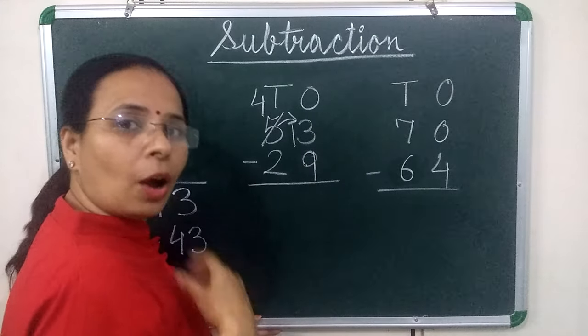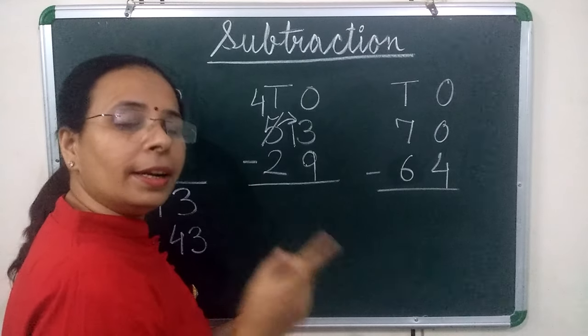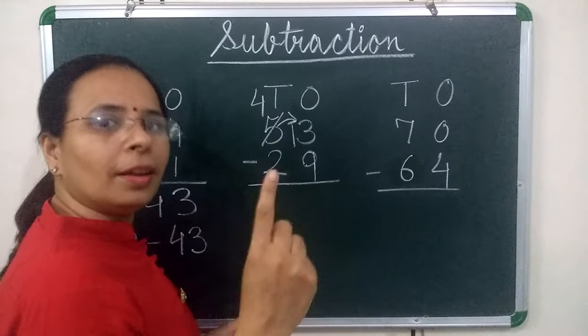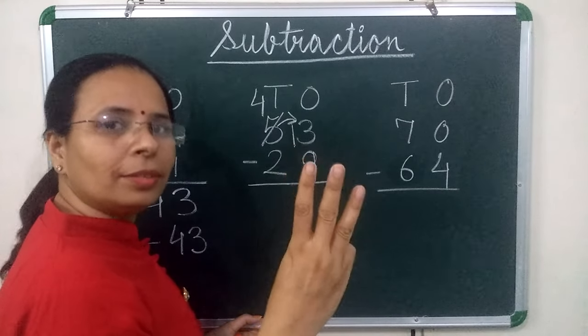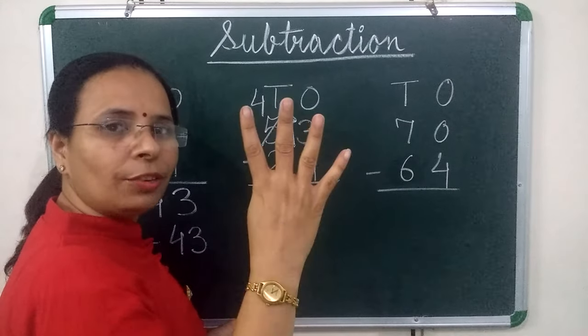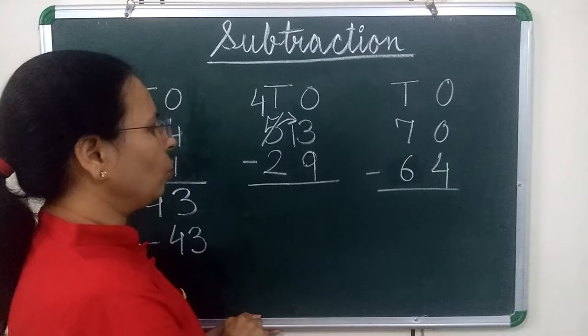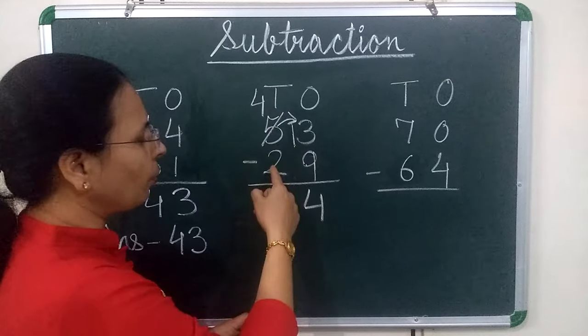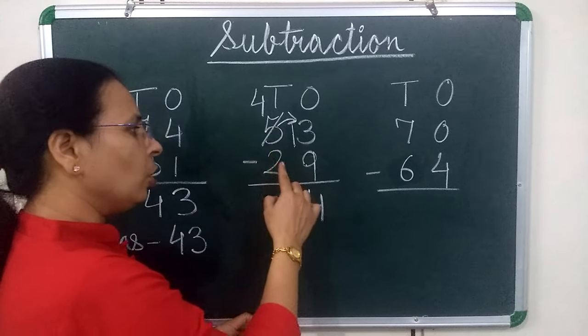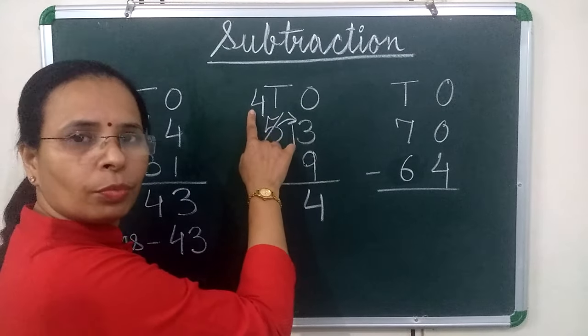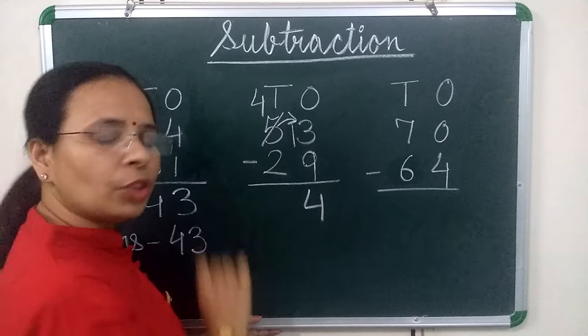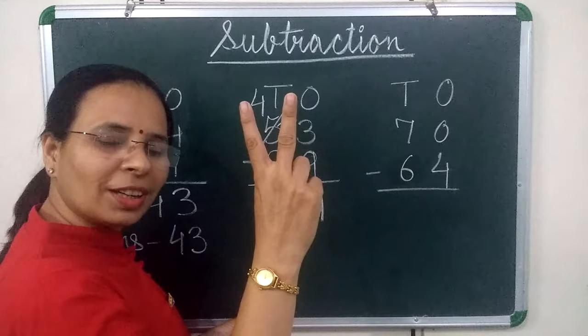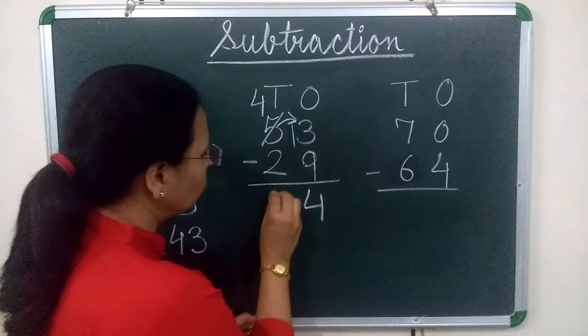Now we will start counting after 9 and till 13. What comes after 9? 10, 11, 12, 13. So how many fingers are out? 4. We will write 4. Now here we have to subtract at 10th place, 2 from 4. So what comes after 2? 3, 4. So how many fingers are out? 2. We will write 2.